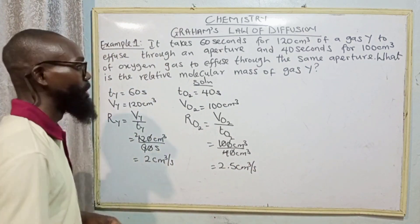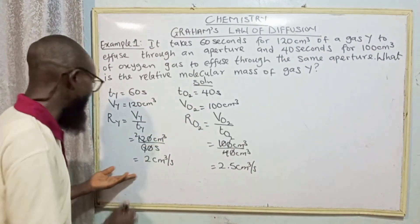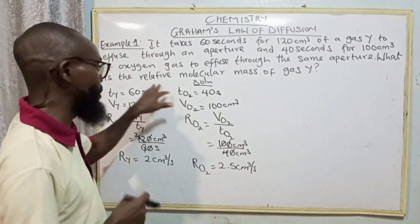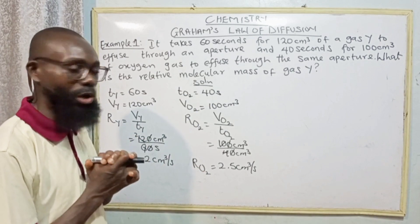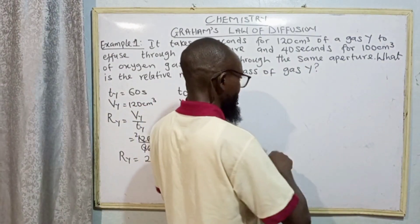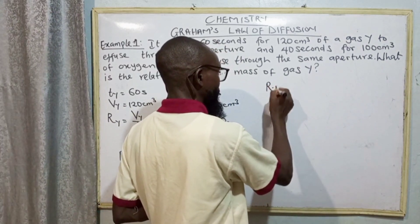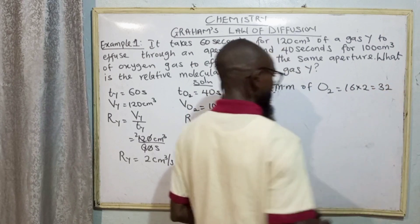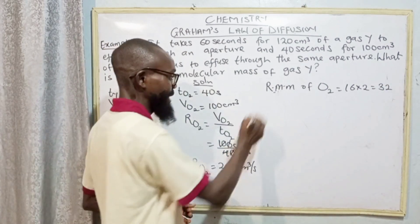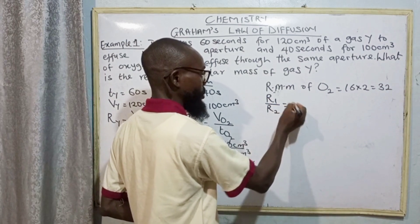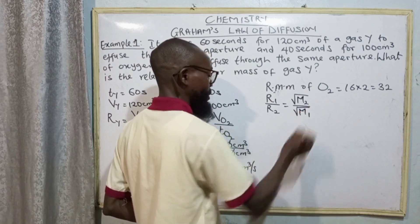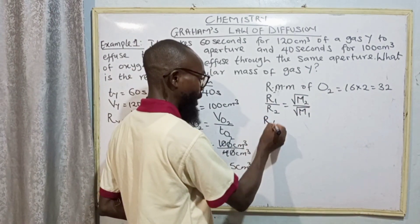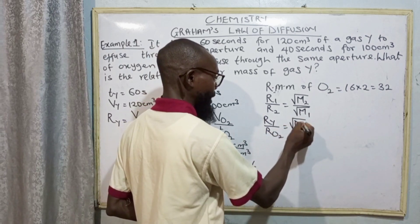The next step is to calculate the relative molecular mass of gas Y. We have gotten our rates of Y and our rates of oxygen, so we can now relate the rate to the mass. We are going to find the relative mass of gas Y, and we can get the relative mass of oxygen. The relative molecular mass of oxygen is atomic mass of oxygen multiplied by 2, which equals 32. Using the formula of rate of diffusion, that's R1 over R2 equals square root of M2 over square root of M1. Our R1 is our first gas, which is gas Y, and our R2 is oxygen.